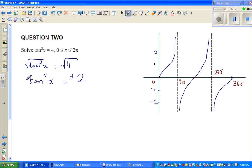Square root of tan squared x is tan x, and square root of 4 is plus or minus 2. Now you have to split this into two parts. One is tan x equals plus 2, or tan x equals minus 2. First, I will explain this in a graphical way.